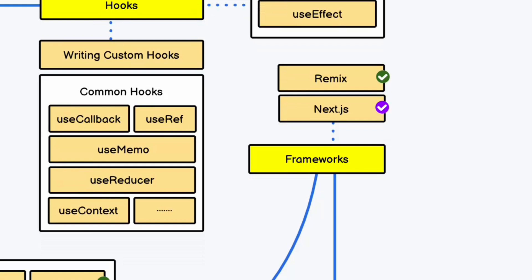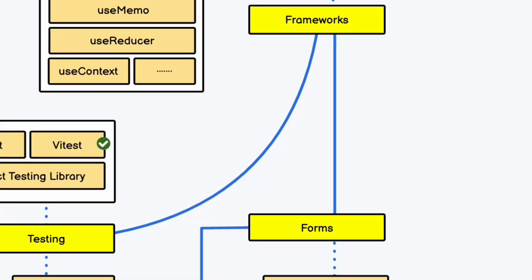We also have the subcategory of writing custom hooks. Under custom hooks, we have useCallback, useRef, useMemo, useReducer, useContext, and you can create your own custom ones. These are mandatory to know because you're going to use them a lot when working with data, fetching from APIs, and displaying on the UI based on user interaction.